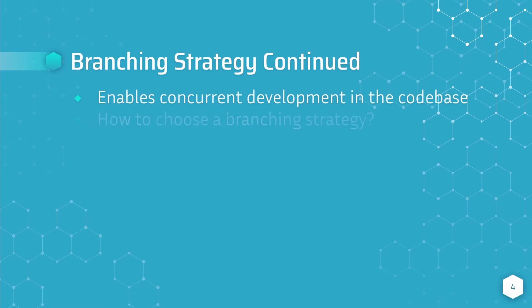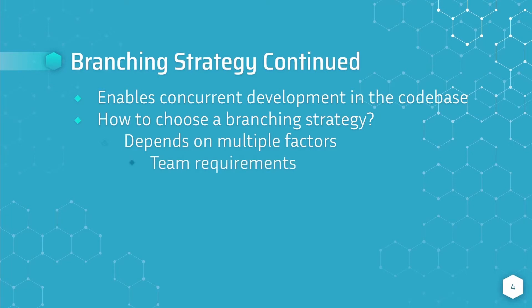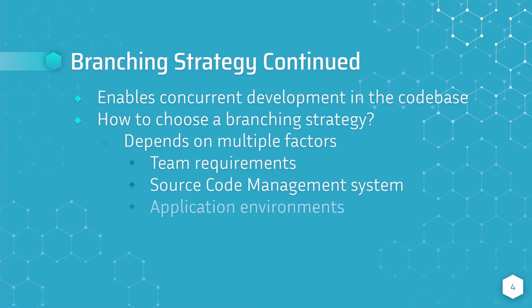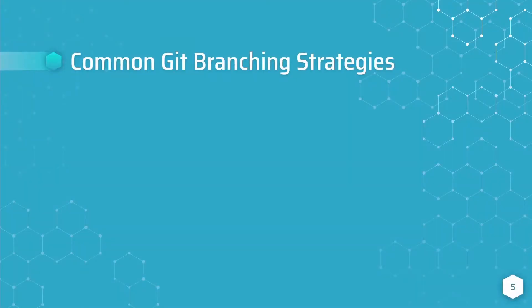But how do you choose a branching strategy? Unfortunately this is not a straightforward question as it depends on multiple factors. These factors include but are not limited to: team requirements, the source code management system that you're using, the environments to which code is deployed and how you want to manage deployment to those environments, and the structure of your codebase. Some of the most common branching strategies in Git include the GitHub flow, the Git flow, and the GitLab flow.